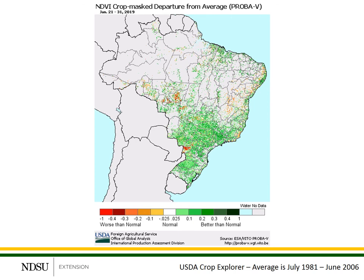In general, the weather has been favorable for South American crops. There are a few areas that are showing some stress, but they're relatively small. This vegetative index image was captured for January 21 through January 31, so there's always a little bit of a delay in getting the information and preparing it. It has continued to be hot and dry in some of the core growing regions, especially in central and southern Brazil.